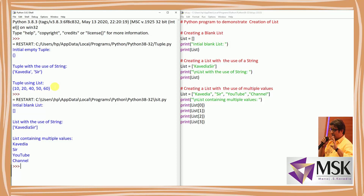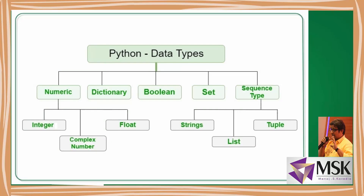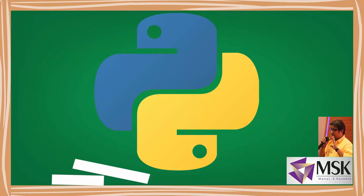To summarize: Python supports numeric data types — integer, float, and complex — as well as dictionary, boolean, set, and sequence data types. Sequence data types include string, list, and tuple, called sequences because they hold sequences of values. My next video will cover some simple practice programs. Stay safe, take care.